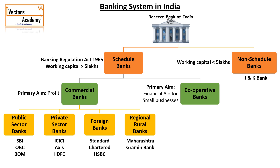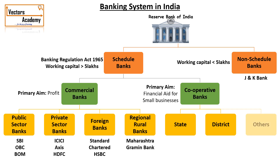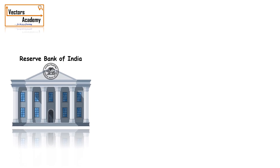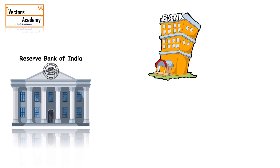The cooperative banks are usually used to fund small businesses. They can be either state or district banks. Once we understand the banking system, let us now understand the different rates involved in the banking system. We have RBI, the bank, and the customer.